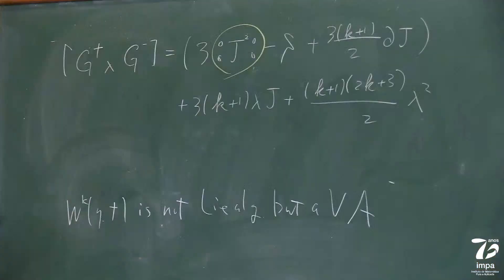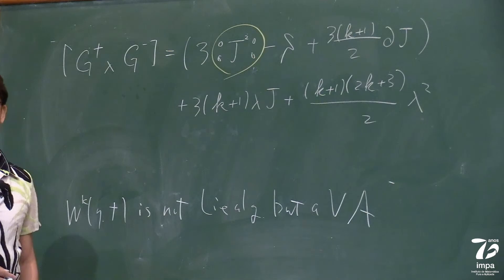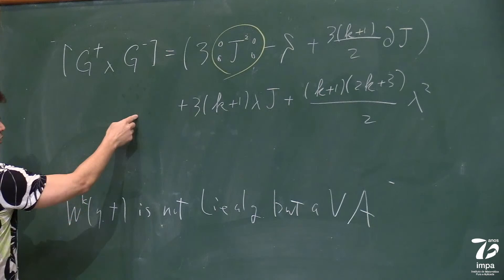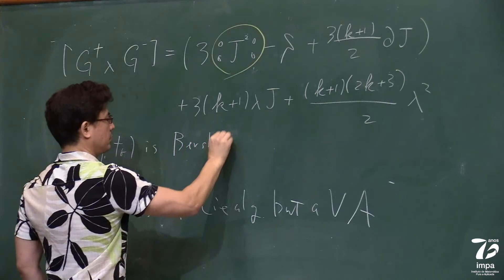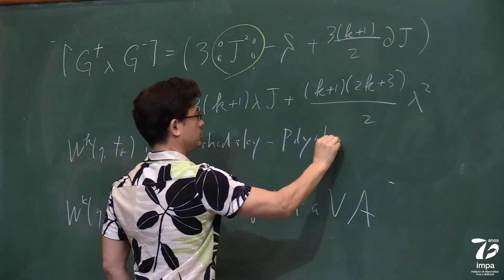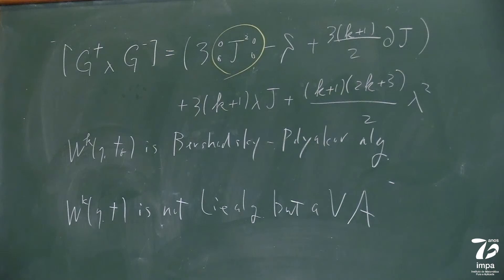We don't really know the OPE between W-algebra generators in full generality. We know where the generators are, but there's no closed formula for the lambda bracket for general W-algebras. This particular W-algebra is called the Bershadsky-Polyakov algebra.